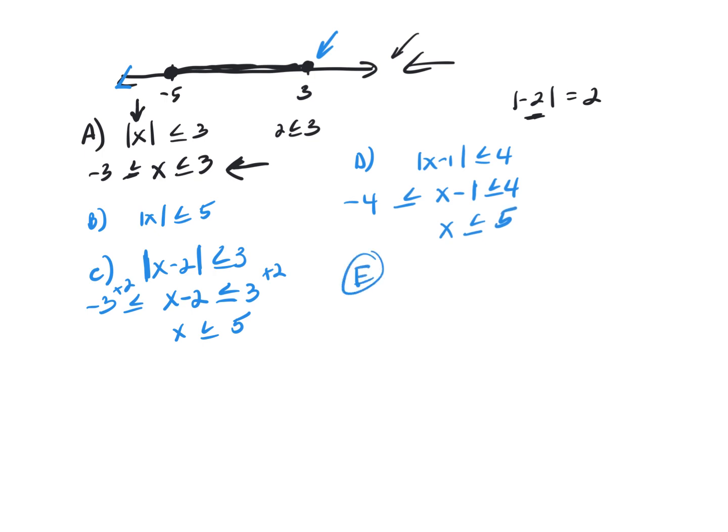Let's look at E. It has to be E. x plus 1, absolute value of x plus 1, less than or equal to 4. Set this up as a compound inequality. Set it up in between 4 and negative 4. Subtract 1. That gives you negative 5. That looks good on that end. Less than or equal to x, less than or equal to 4 minus 1 is 3. That's what you got right here. So your answer is E.